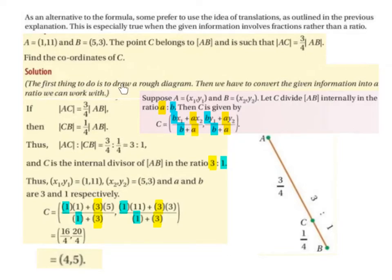So the first thing to do is to draw a rough diagram. Then we have to convert the given information into a ratio we can work with. So we have the line AB. We just start drawing a line, labelling one point A and the other point B.